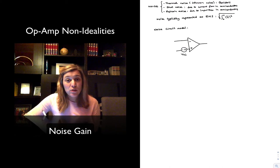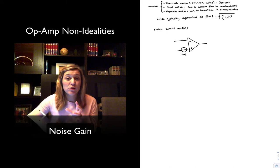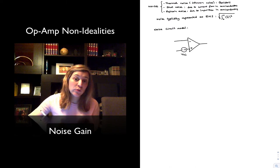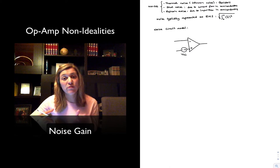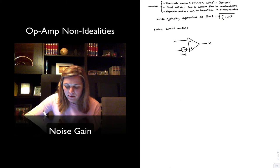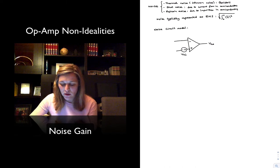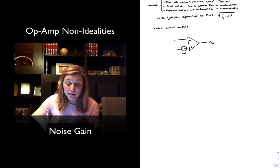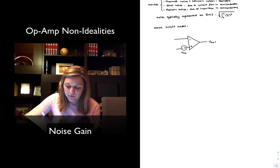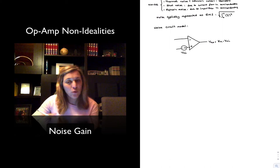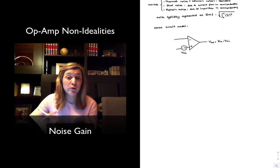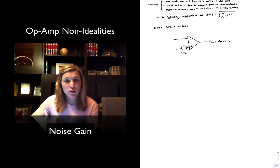This approach considers noise as RTI — noise referred to input. Sometimes noise calculations are given as RTO — referred to output — providing the VNO, the noise output voltage value. Both quantities are related by the noise gain, typically represented as K sub N. The noise output voltage equals the noise gain times the noise input voltage. Whether noise is given as RTI or RTO, you can calculate the other if you know the noise gain.